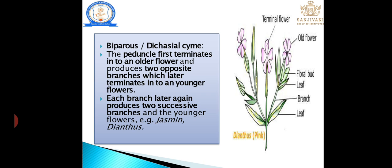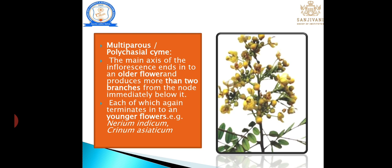Biparous: peduncle first terminates into an older flower and produces two opposite branches from its base — two flowers originate at the same point. From the base of those two flowers, another flower is produced. Multiparous: similar to biparous, but from the two branches, more than two flowers are produced; it is also known as polychasium.